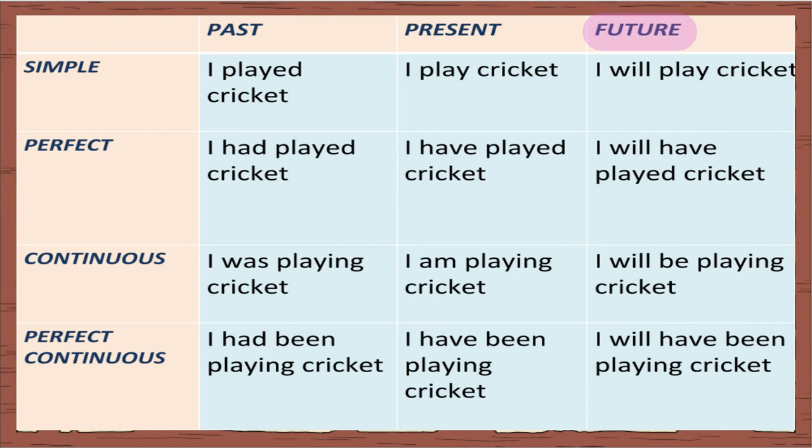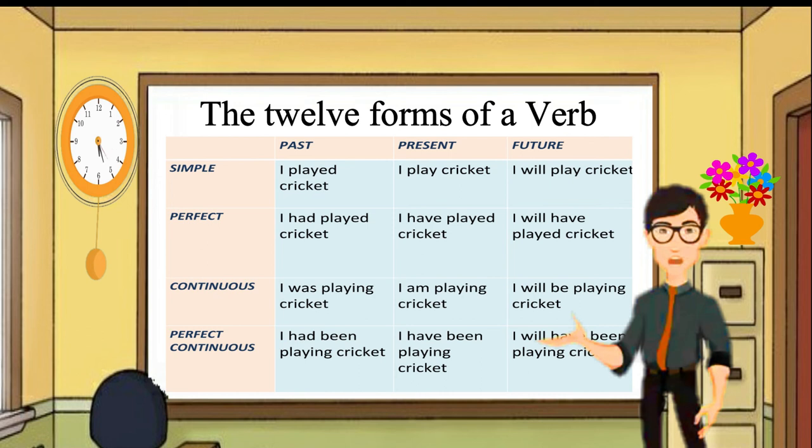In the future tense, we can say, I will play cricket, I will have played cricket, I will be playing cricket, or I will have been playing cricket. These four forms convey different senses about the status of the action of playing cricket.